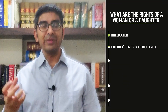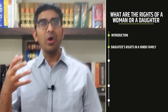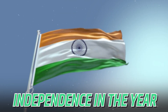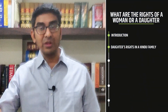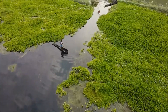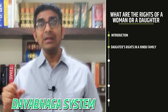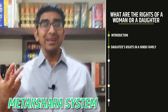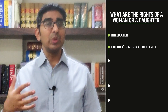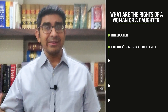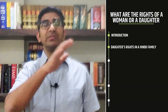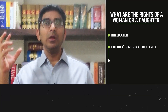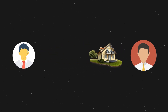Before we talk about daughter's rights in a Hindu family, let us first discuss the background in which the entire discussion of daughter's rights is happening. We attained our independence in the year 1947. At that point of time, there were different schools of Hindu law being followed in different parts of the country, such as the Dayabhaga system in the West Bengal area and the Mitakshara system in other parts. So in the year 1956, the Indian legislature took into account all these different practices and passed a law called the Hindu Succession Act 1956, through which they laid down a uniform set of rules for how property devolves from one person to another in a Hindu family.